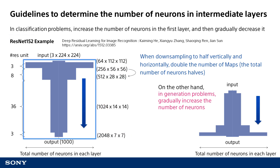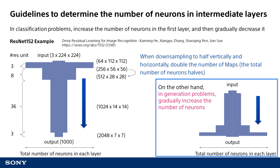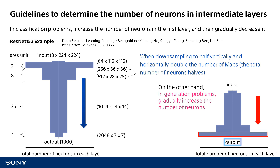This is the theory for the classification problem. On the other hand, there are also neural networks that generate images. In such cases, basically the number of neurons is gradually increased, and the target data is generated from a number of neurons that is much larger than the data that is ultimately to be output.